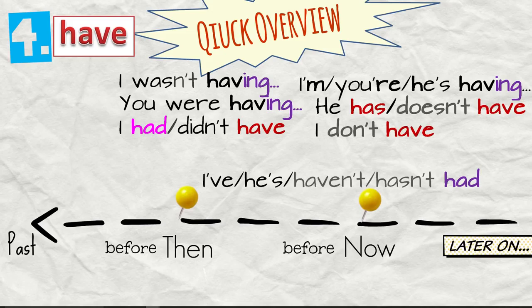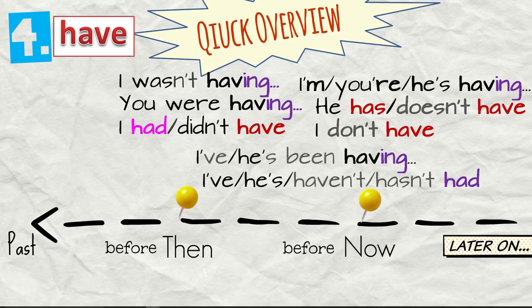I've had, he's had, or the negative, I haven't had, he hasn't had. Alright, then we have I've been having or he's been having. And I'd or I hadn't had. I'd been having.